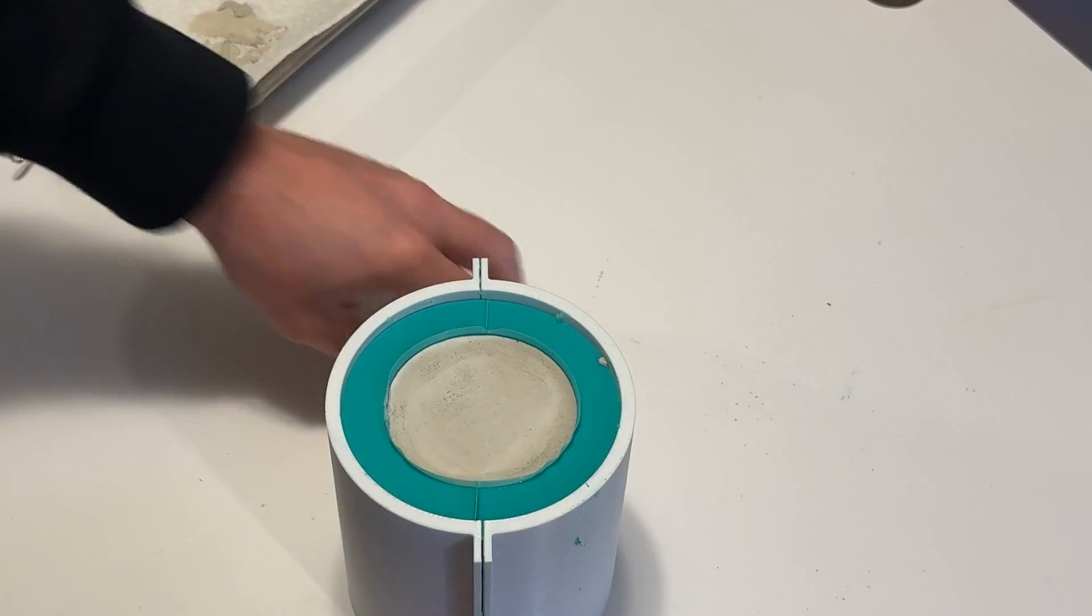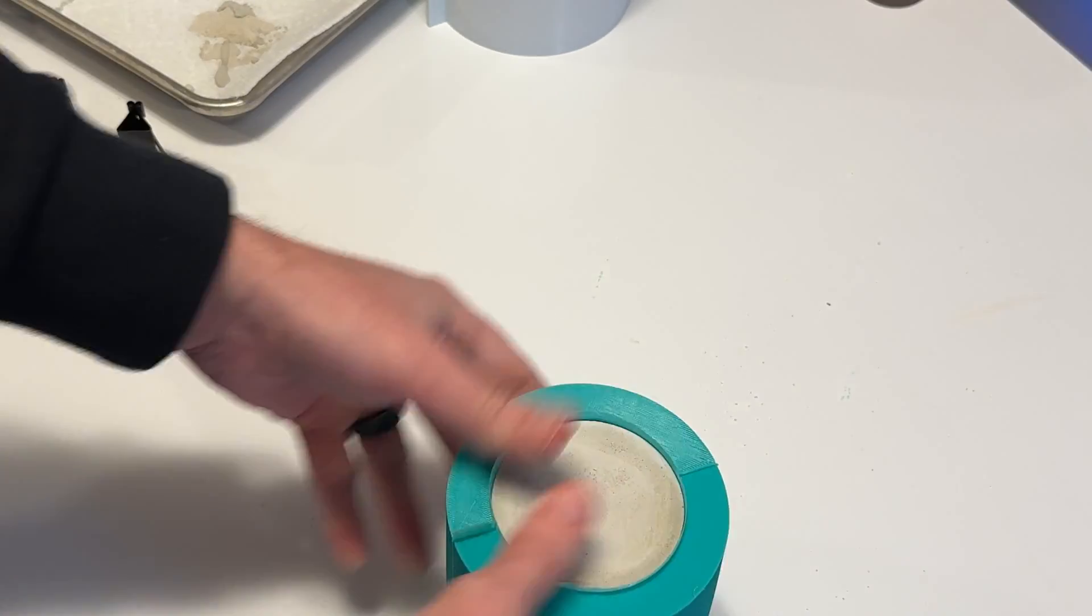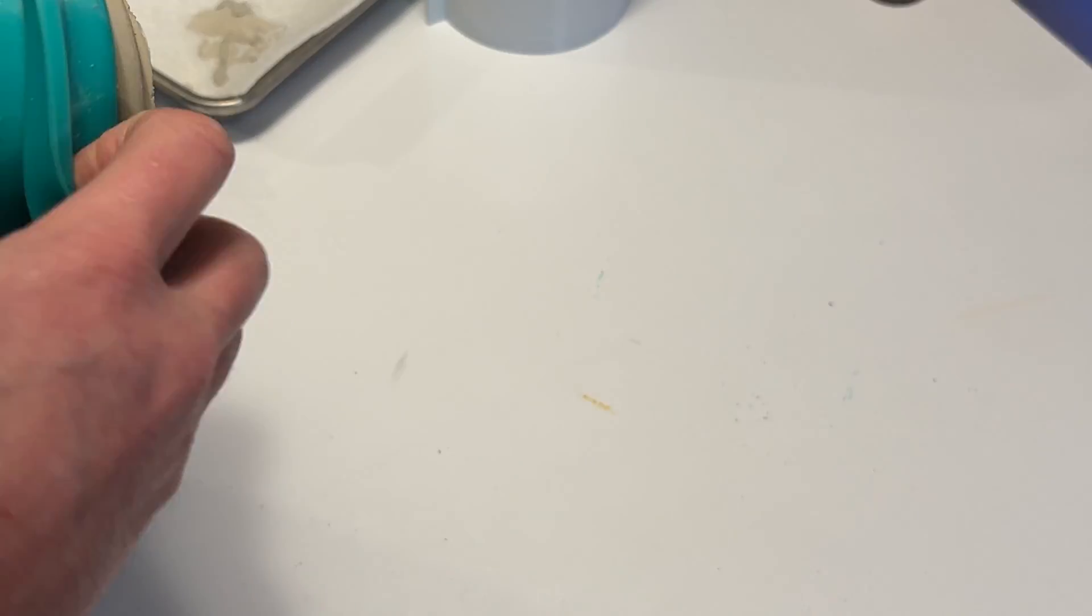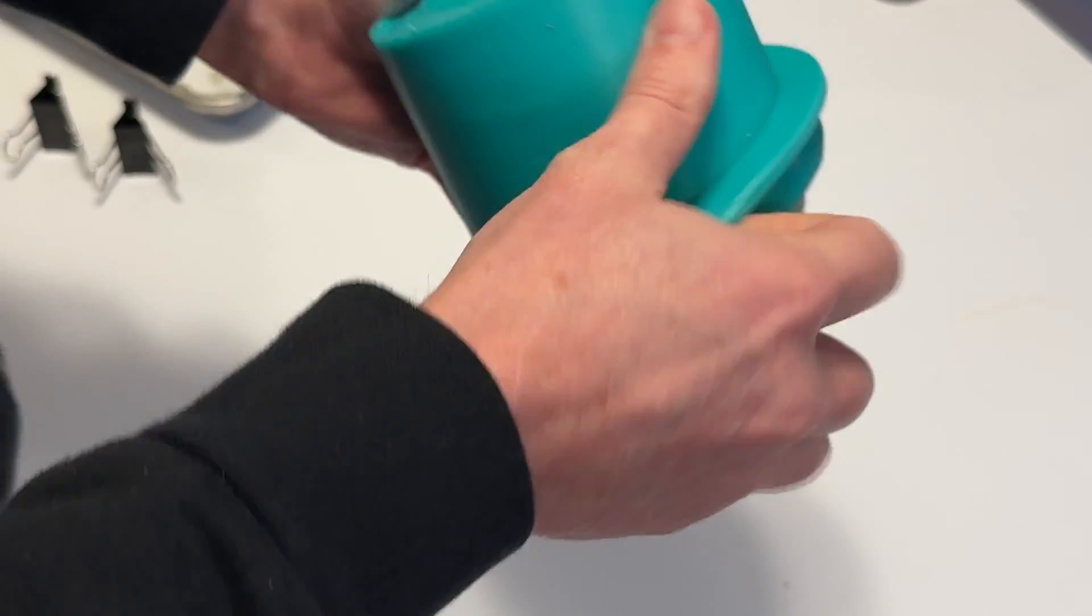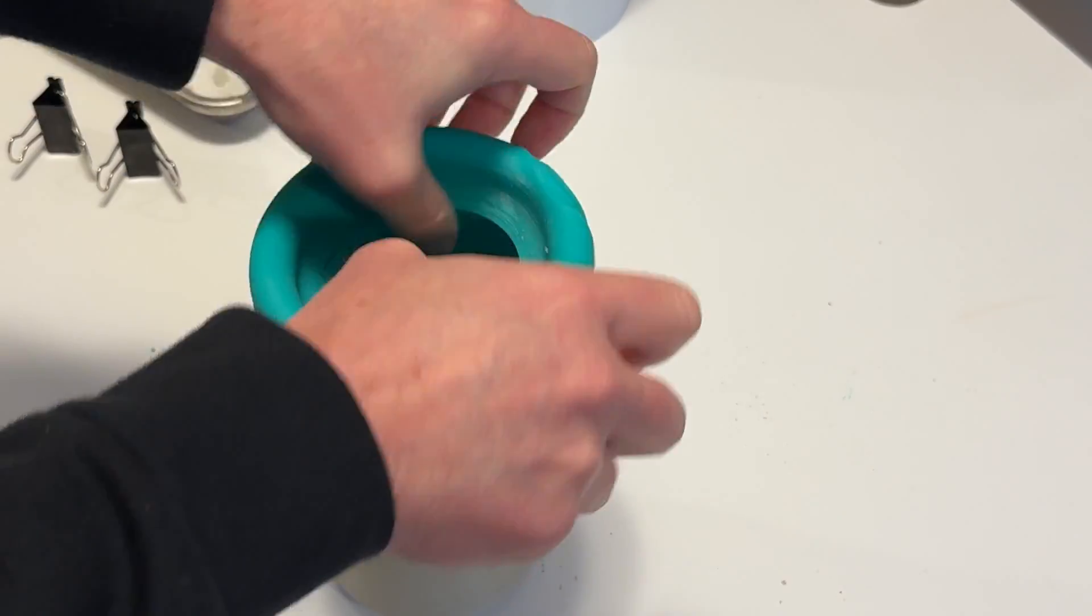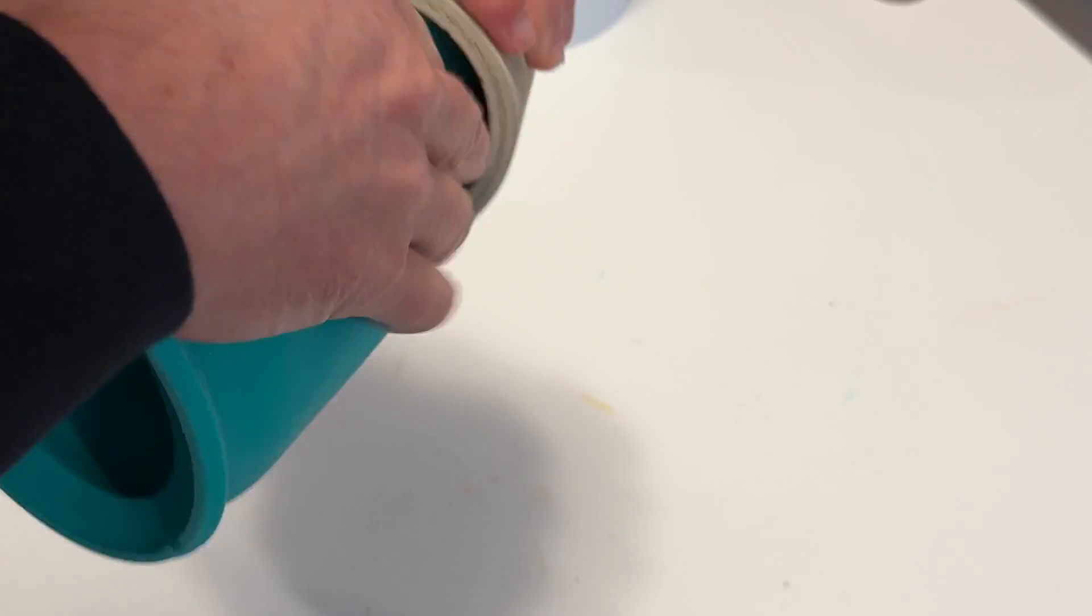And then with the Cementol, it only takes about an hour for it to cure hard enough to be able to demold. So you'll see demolding is actually a fairly easy process, a little easier than the demolding of the silicone itself. You can still get that suction effect in the hole of the vessel, but overall it's not too tough of a process.